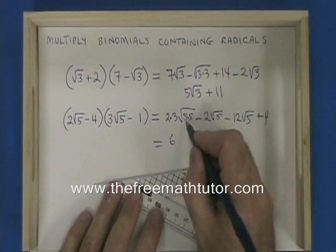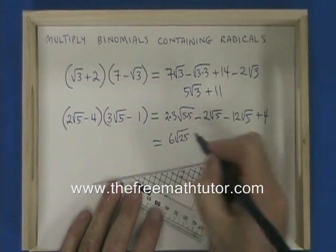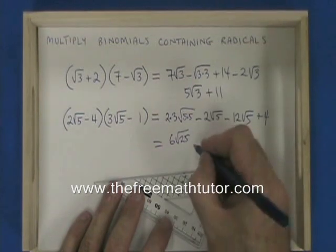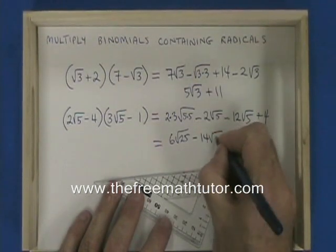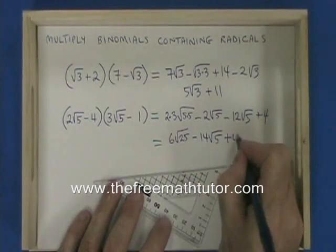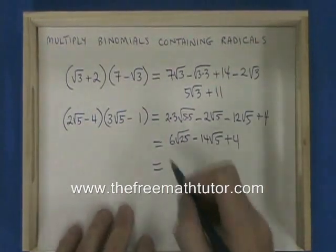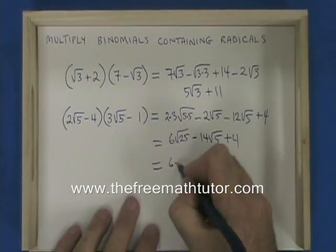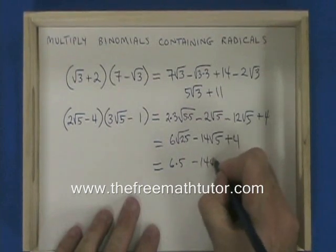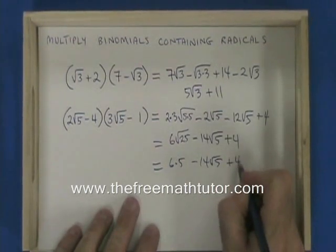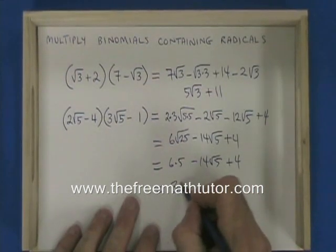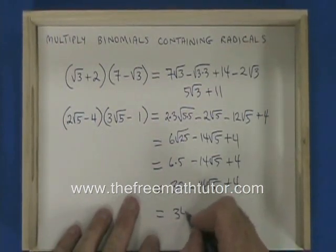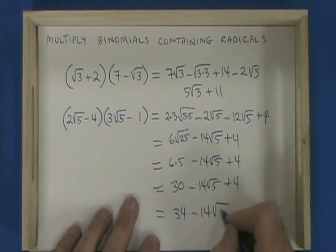2 times 3 is 6, and 5 times 5 is 25, so I have 6 root 25. Minus 2 root 5 minus 12 root 5 is minus 14 root 5, and I have plus 4. The square root of 25 is 5, so I have 6 times 5, minus 14 root 5, plus 4. 6 times 5 is 30, so my final answer is 34 minus 14 root 5.